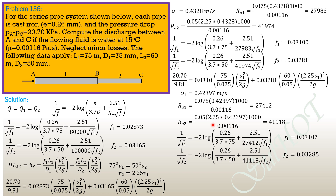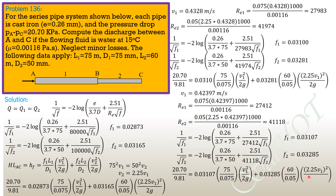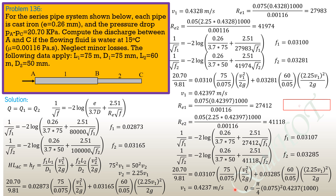Substituting F1 = 0.03107 and F2 = 0.03285 into the head loss equation gives the final V1 = 0.4237 m/s, confirming convergence. The discharge is Q equals pi/4 times (0.075)² times 0.4237 times 1000, which equals 1.872 liters per second.